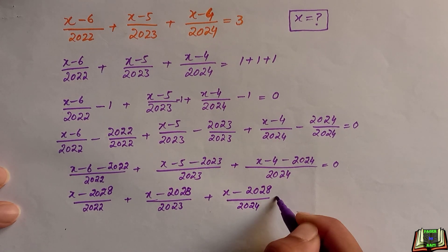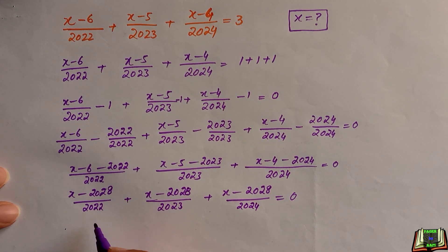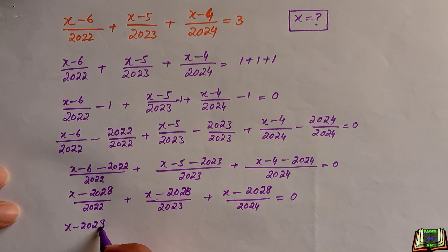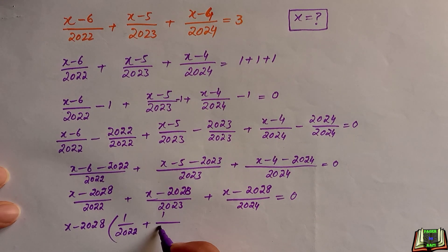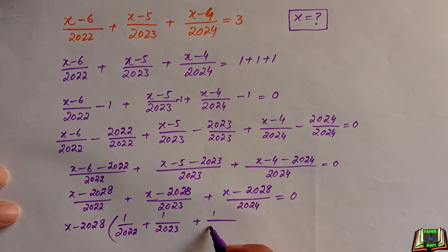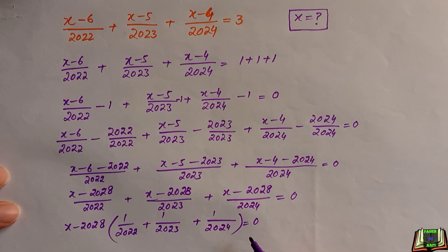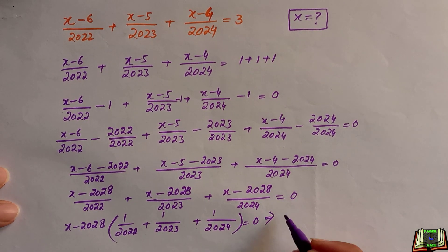We can see that (x minus 2028) is common, so taking (x minus 2028) as a common factor, we are left with 1 over 2022 plus 1 over 2023 plus 1 over 2024, and this equals 0.